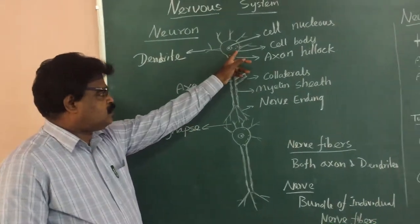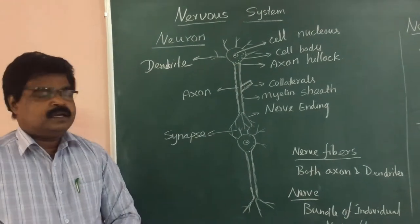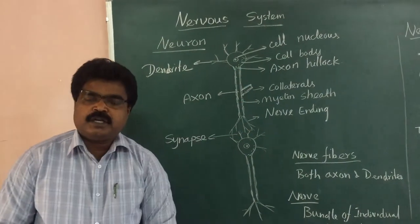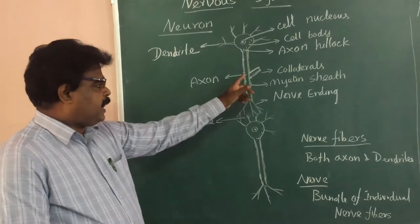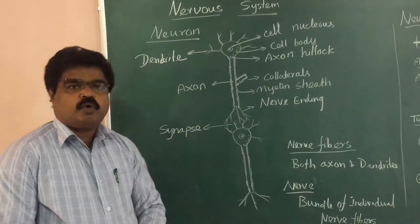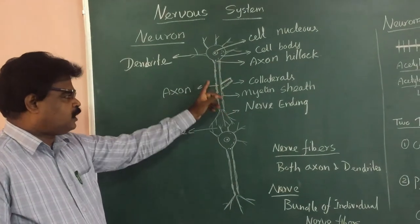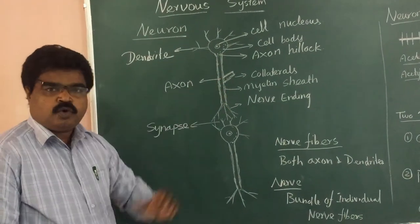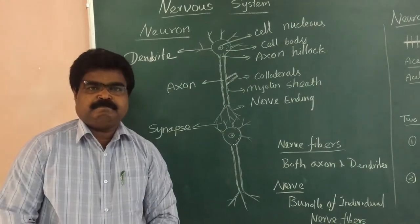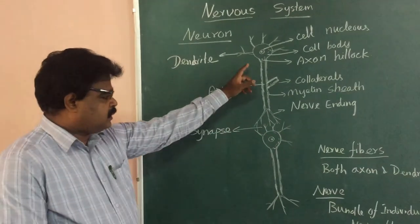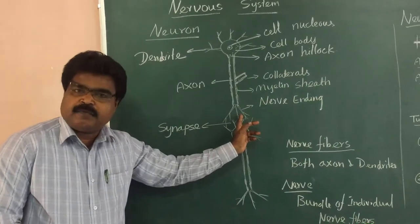Adjacent to the cell body is the axon hillock, where action potentials are generated. The main branches of the axon are called collaterals. Most of the axons are coated with a protein called myelin — it is called the myelin sheath. The axon ends with nerve ending fibers.